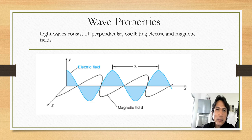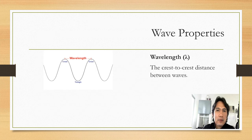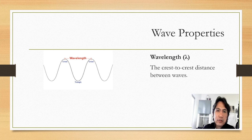When it comes to the wave properties of light, light waves consist of perpendicular oscillating electric and magnetic fields. So as a wave, it has an electric field and magnetic waves. Let's explore what is wavelength, simply denoted as lambda. Wavelength is the crest-to-crest distance between waves.